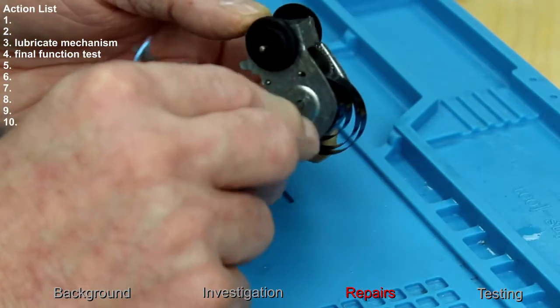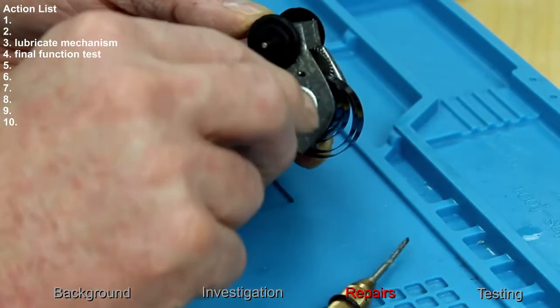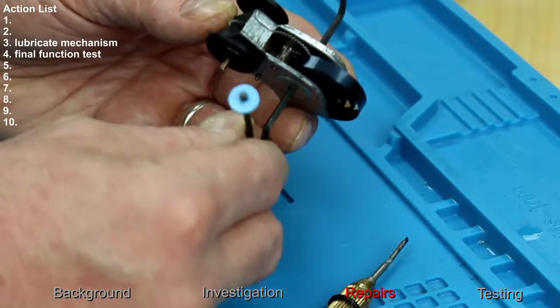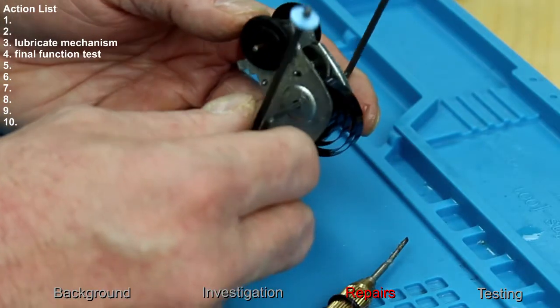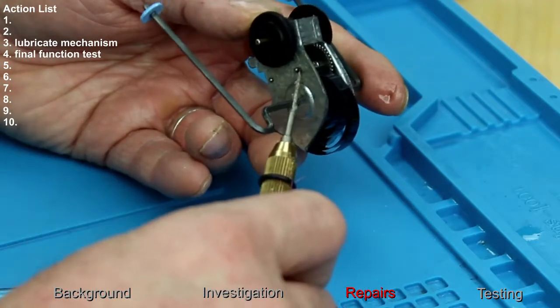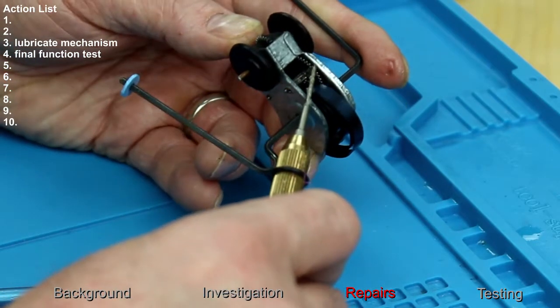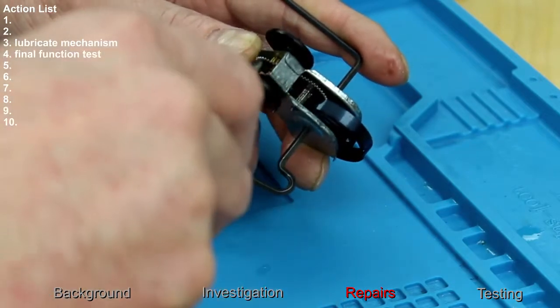So as I turn that, that moves up, disengages it, but when you let go the tension of the spring forces that cog down, that gear down to engage on the wheels.